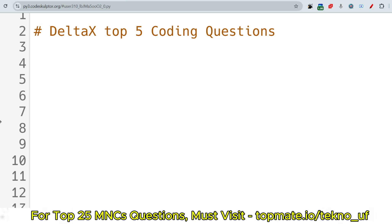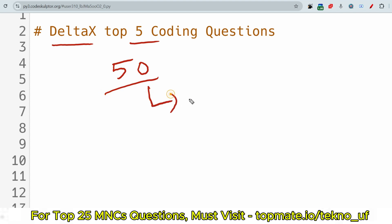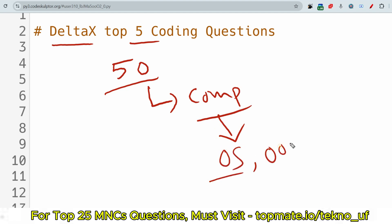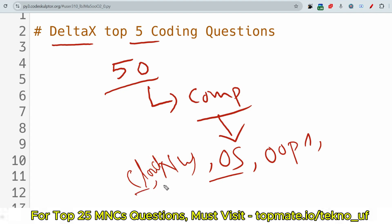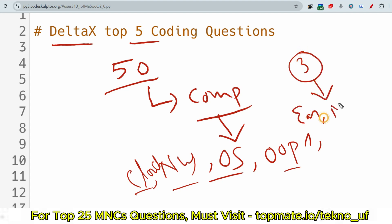Hello, my dear family members. I hope all of you are preparing well for your upcoming Delta S exam. In this exam, you will have a total of 50 MCQ questions from computer fundamentals — covering operating systems, OOP concepts, networking, cloud, and basics of Java or C++. After that, you'll have three coding questions: one easy, one medium, and one hard.